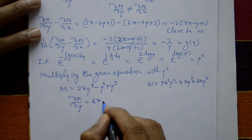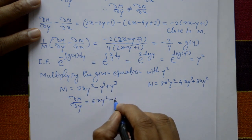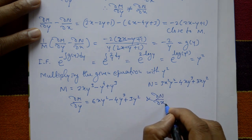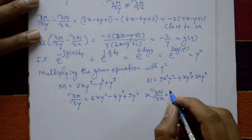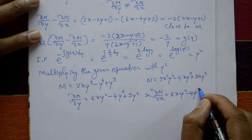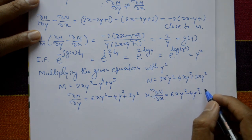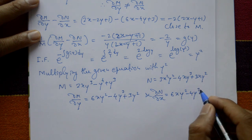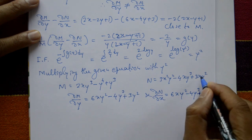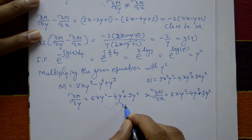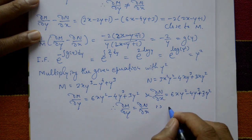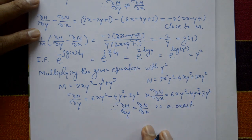Differentiate the new M with respect to y partially: ∂M/∂y = 6xy² - 4y³ + 3y². This equals ∂N/∂x, confirming the equation is now exact.